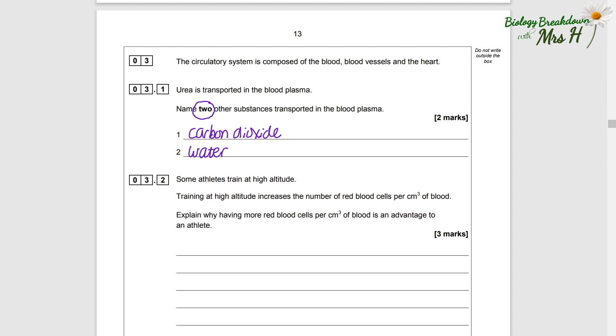So I would go for carbon dioxide and water as my two, and you must only put two. But there are other examples you could have put, such as glucose, amino acids, lactic acid. But you can't put oxygen because oxygen is bound up in the hemoglobin of a red blood cell, so it's not actually loose in the plasma.